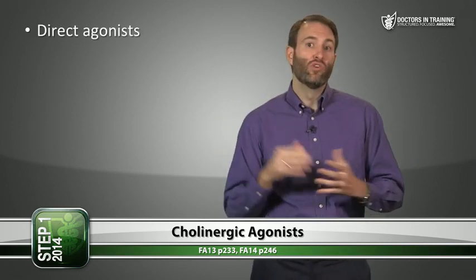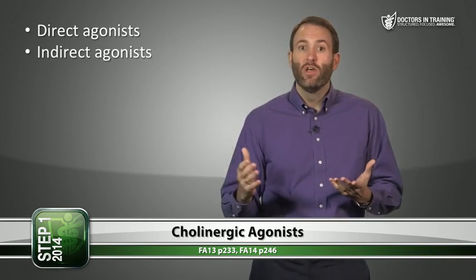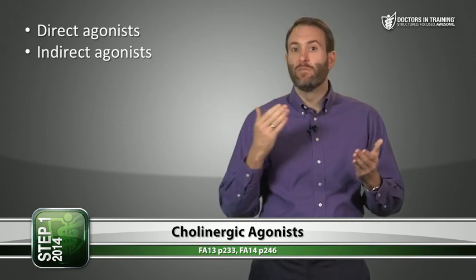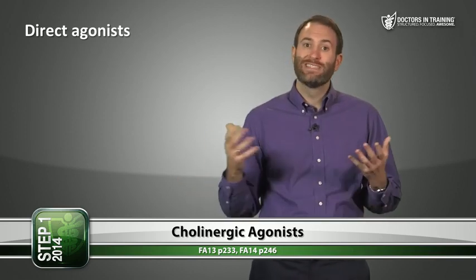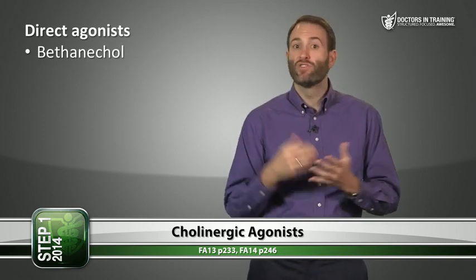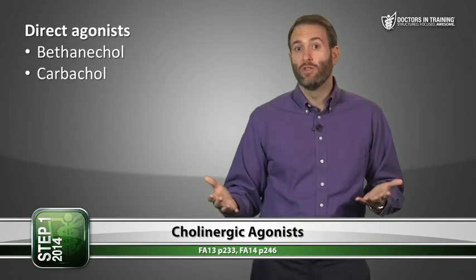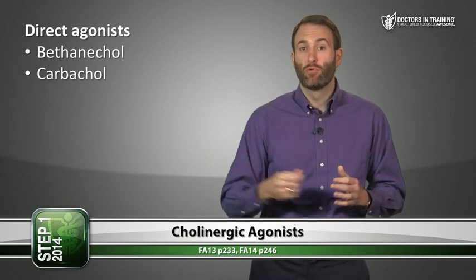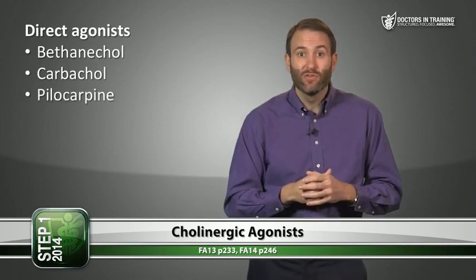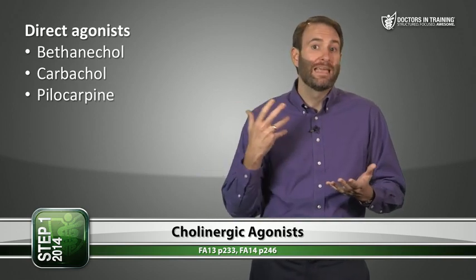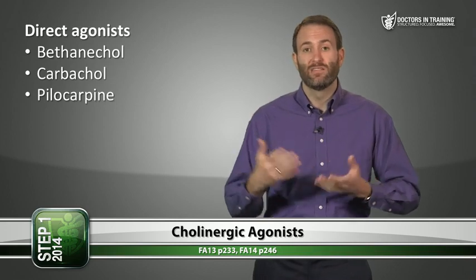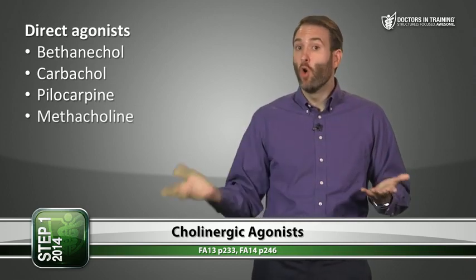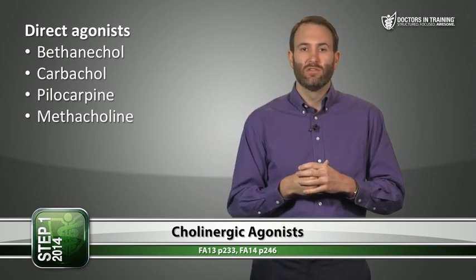There are two types of cholinergic agonists: direct and indirect. Direct agonists bind directly to the muscarinic receptor, mimicking acetylcholine. Bethanacol is used for post-operative ileus and urinary retention. Carbachol is used for glaucoma by causing pupillary contraction and decreasing intraocular pressure. Pilocarpine is a potent stimulator of sweat, tears, and saliva — useful for patients with dry mouth after parotid gland cancer treatment. Methacholine was historically used as a challenge test for diagnosing asthma.